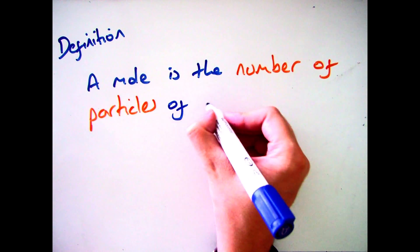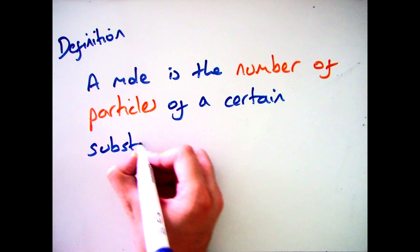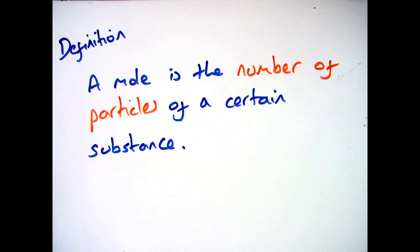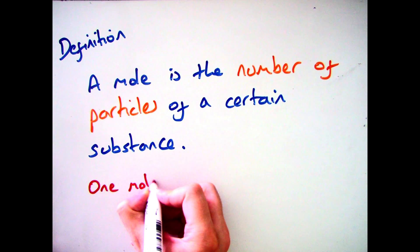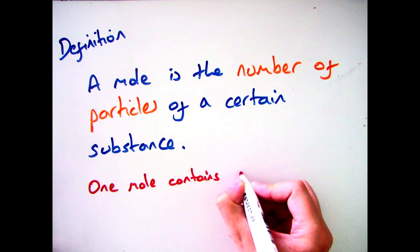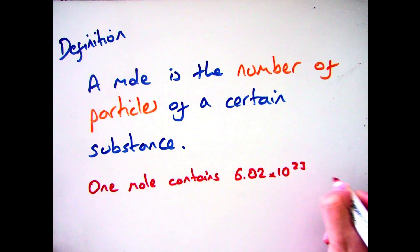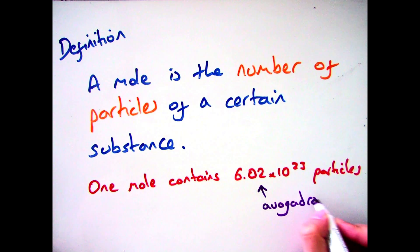So the definition is a mole is the number of particles of a certain substance. And one mole contains 6.02 times 10 to the 23 particles. That number is known as Avogadro's number or the Avogadro's constant.